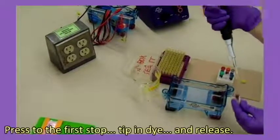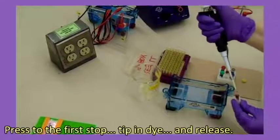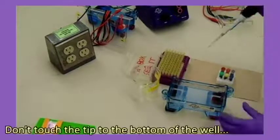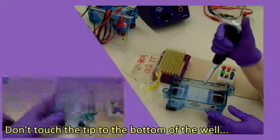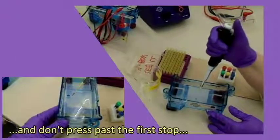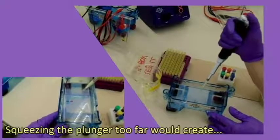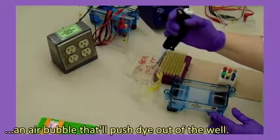Press to the first stop. Tip in dye and release. Cap on, dye in rack. Don't touch the tip to the bottom of the well, and don't press past the first stop. Squeezing the plunger too far would create an air bubble that'll push dye out of the well.